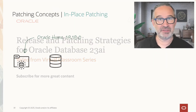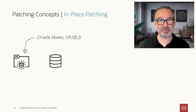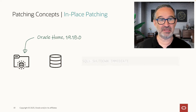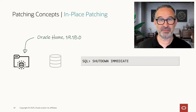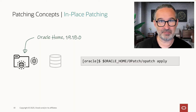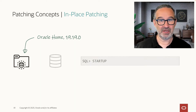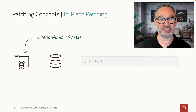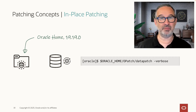Which patching methods do we offer? In-place patching is the first one. I have a 19.18 home in my case. In-place means I stop my database, then as the next step, I will apply the most recent release update, 19.19 to it with opatch apply. And once it's a 19.19 home, I can start up my database. And once the database is started, I run datapatch -verbose.